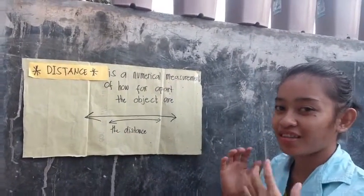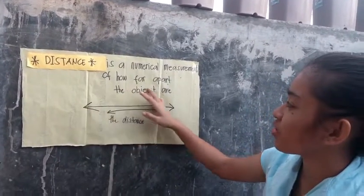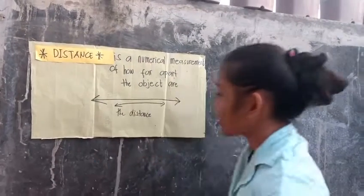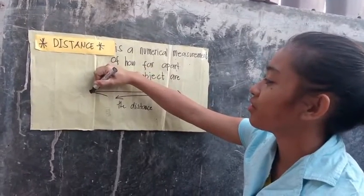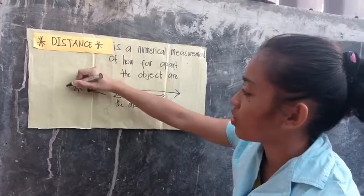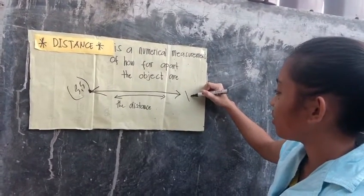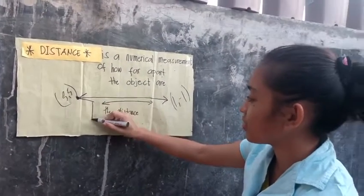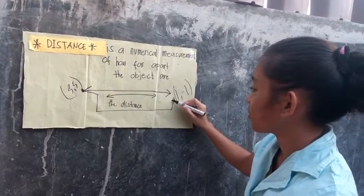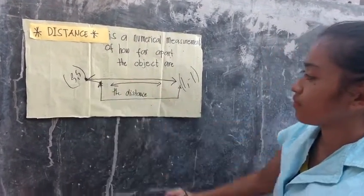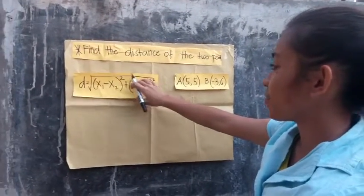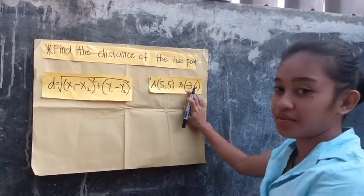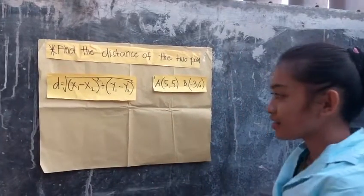For today, I will discuss distance. Distance is a numerical measurement of how far apart objects are. Here is one example: find the distance between the two points (5, 5) and (-3, 6). This is the distance formula.